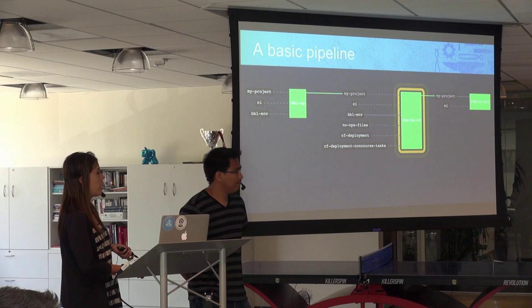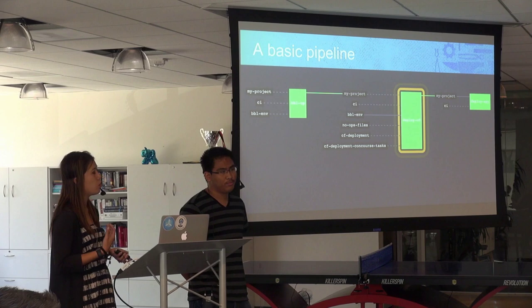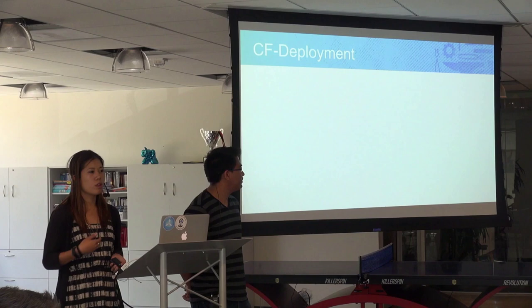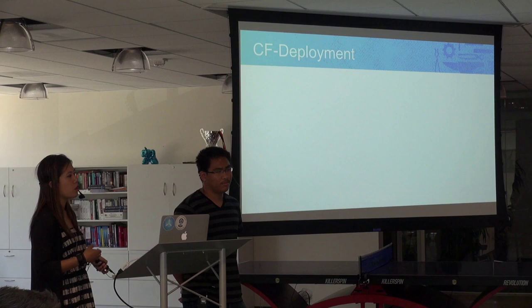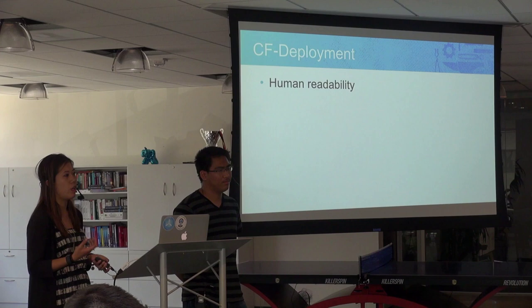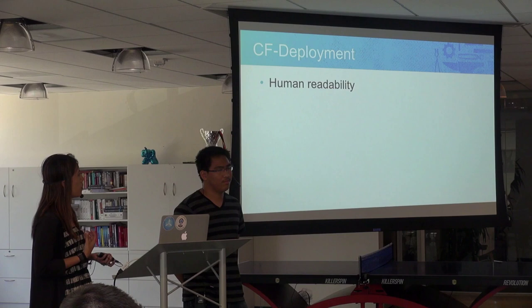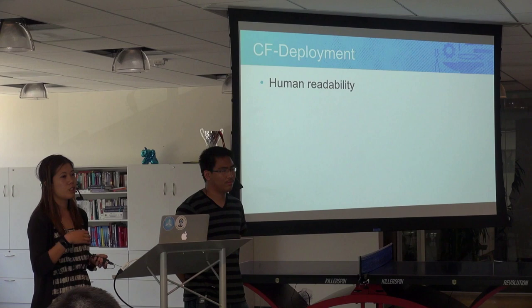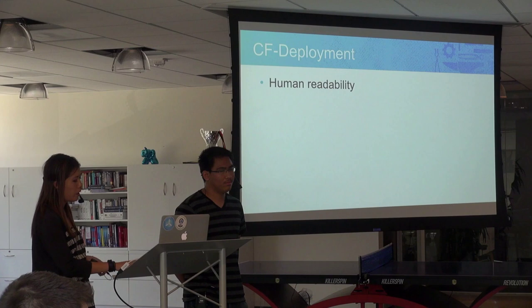Now that we've gone through bubbling up and have a BOSH director and CF infrastructure, we can deploy Cloud Foundry using CF Deployment. CF Deployment is a repository that houses the base manifests for your Cloud Foundry installation. One of the benefits is that it really emphasizes human readability — the repository is structured to make it easy for a user to navigate, and it features a static main manifest that breaks up components to make it easy and understandable.